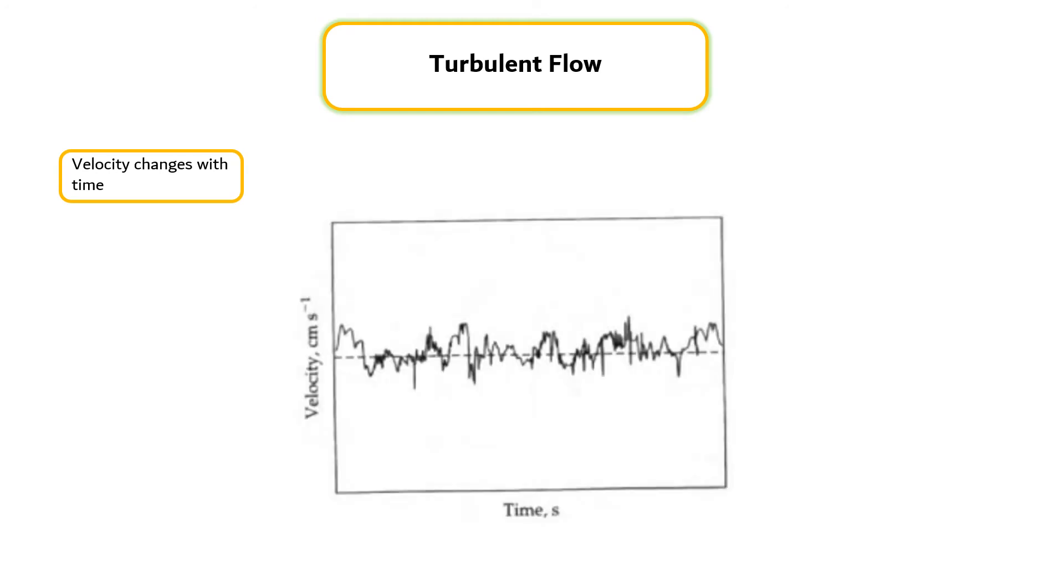In a steady laminar flow, the velocity at a given location does not change with time. A significant feature of turbulent flow is that the velocity at a given location changes with time, even when the overall flow is steady, as shown in the figure. However, the time average velocity at a given location is a well-defined quantity, as shown by the dashed line in the figure.